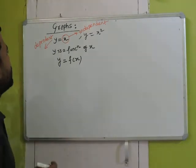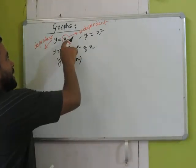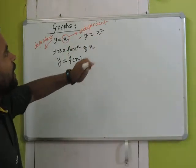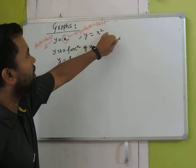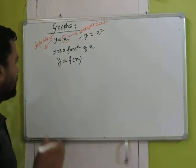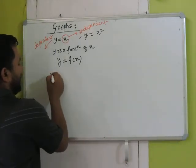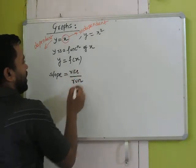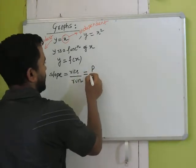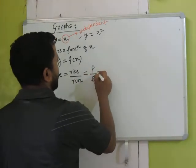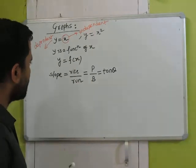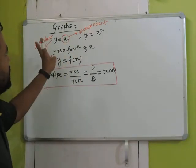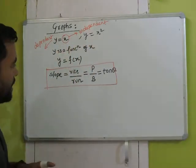Why is x called independent and y called dependent? Because if you make x equal to 1, then y is automatically fixed. If you make x equal to 2, y is again automatically fixed. That's why y is called the dependent variable and x is called the independent variable. The second concept in graphs is slope. Slope is rise by run, also called tan(theta) in mathematics.